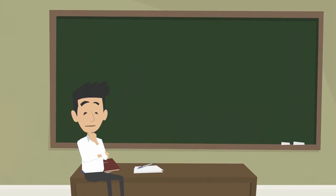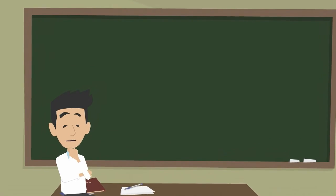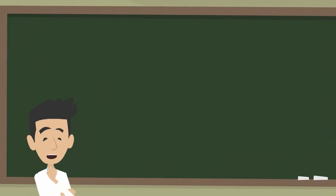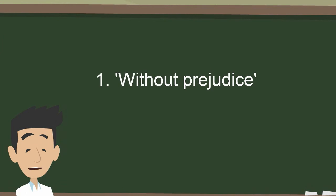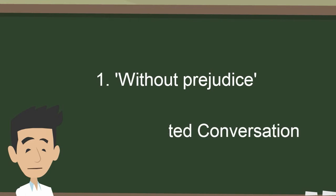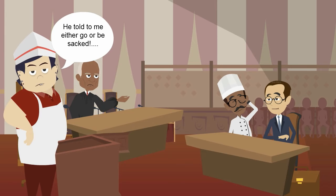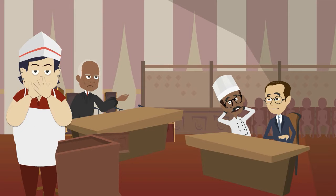There are two types of discussion which are protected from disclosure under UK law. If you have an off-the-record discussion on either a without prejudice basis, or by entering into a protected conversation, your employee will not be able to retell your discussions at any tribunal.